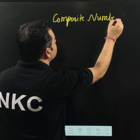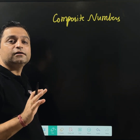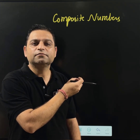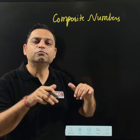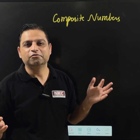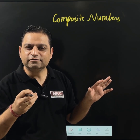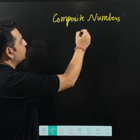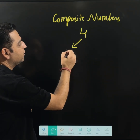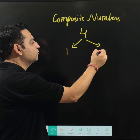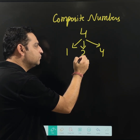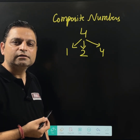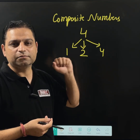What are composite numbers? Numbers which are not prime. Composite numbers are the numbers which have factors more than 2 — the number itself, 1, and at least one more. For example, 4 — it has factor 1 and factor 4, but 4 is also having a factor 2. So 4 is divisible by 2, which means 4 is a composite number.